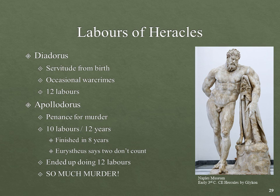So what do we have here in terms of the two different narratives for the labors of Hercules? In Diodorus: it's servitude from birth, there are occasional war crimes, and there are twelve labors from the very beginning. In Apollodorus: it is penance for one of his many murder sprees, and there are ten labors to be accomplished over twelve years. In Apollodorus, Heracles finishes in eight years and says 'I did the ten, I'm the best — time to murder.' And Eurystheus says two of them didn't count, so he ends up doing twelve anyway. And of course — so much murder.